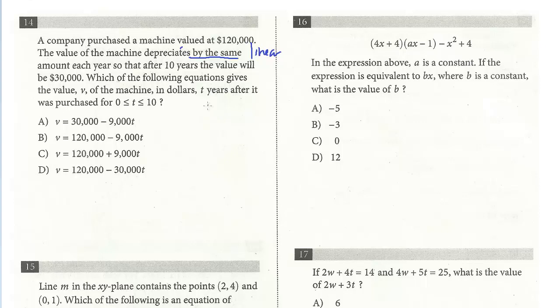If you want to find the total depreciation, it went from $120,000 to $30,000, a total of $90,000, and that was over 10 years. So it depreciates at $9,000 per year. To figure out how much the machine is worth T years after, we know the starting value is $120,000, and then it's just minus $9,000 times the number of years, T. So it is B.